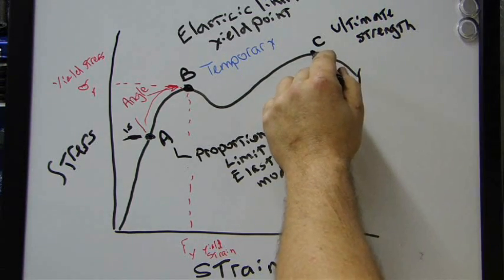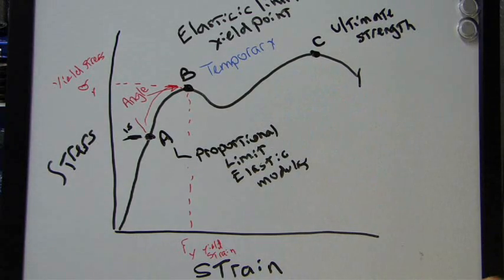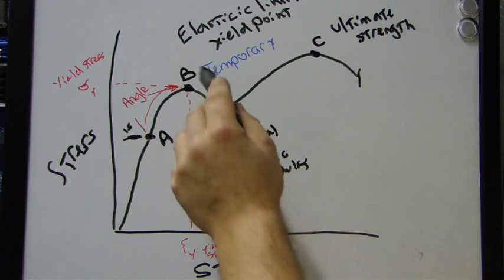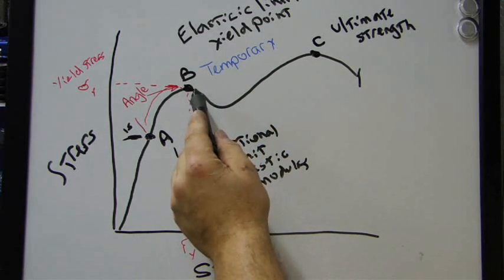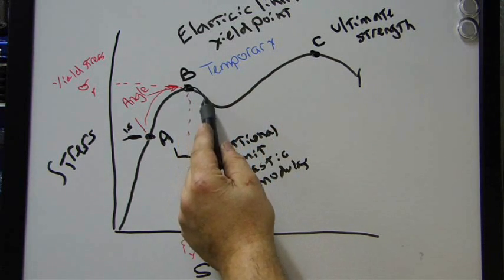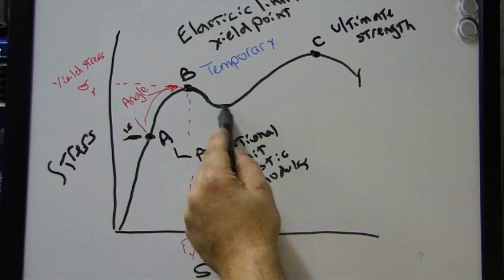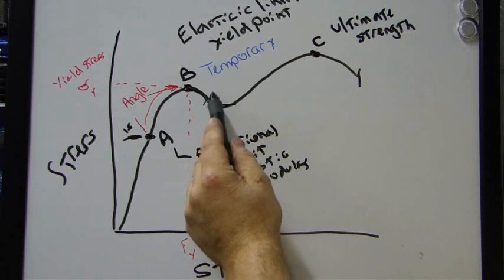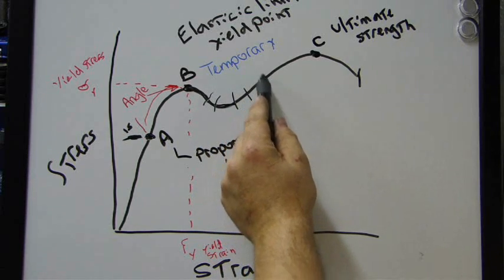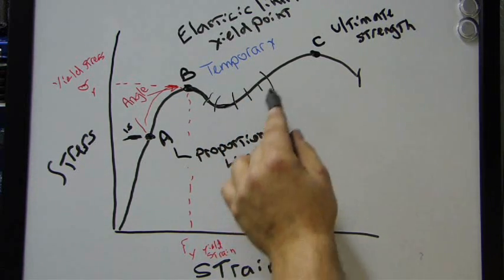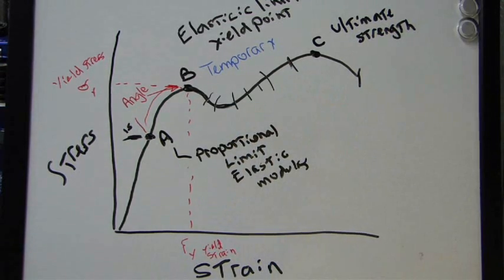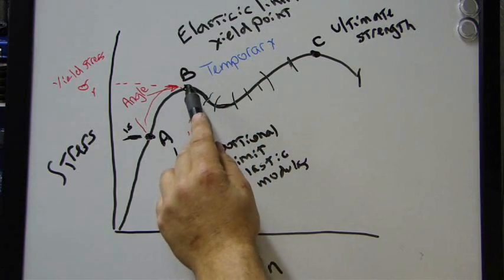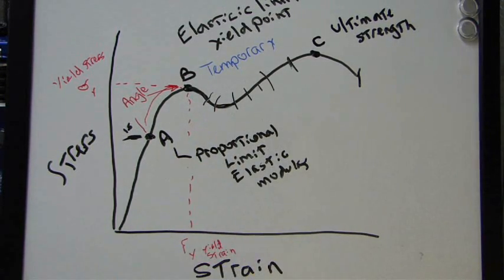This is where, when you have a fastener that's torqued to yield, you're torquing it past this point, you're getting up towards this point, and this is where you have plastic deformation. On this side of the torque curve, right here, on the stress strain diagram, here is where the fastener is permanently deformed. That means, once it's torqued down, and the angle's applied, you take that bolt out, you have to throw it away. Because it's been stressed past its temporary position to go back into its original position.